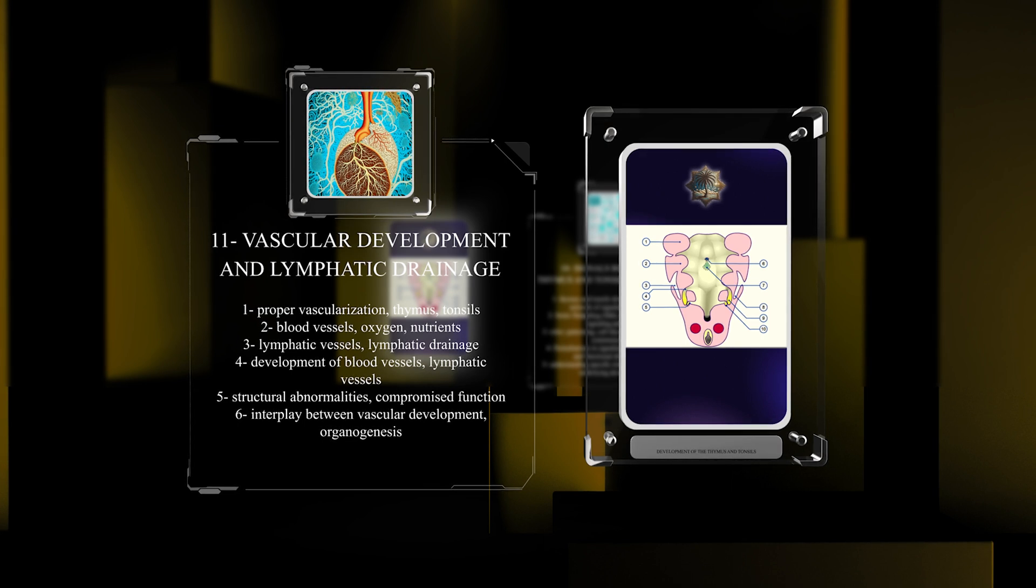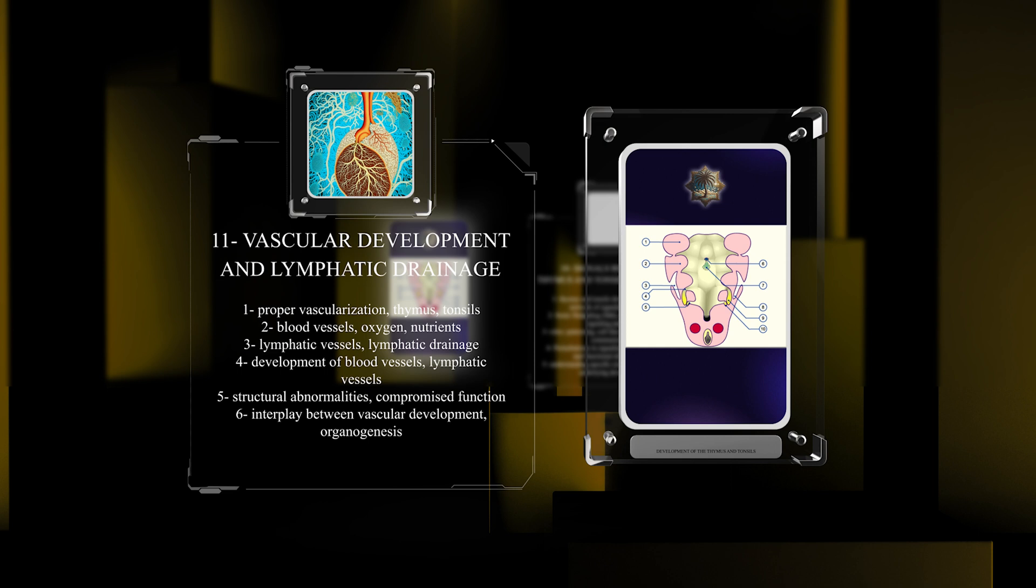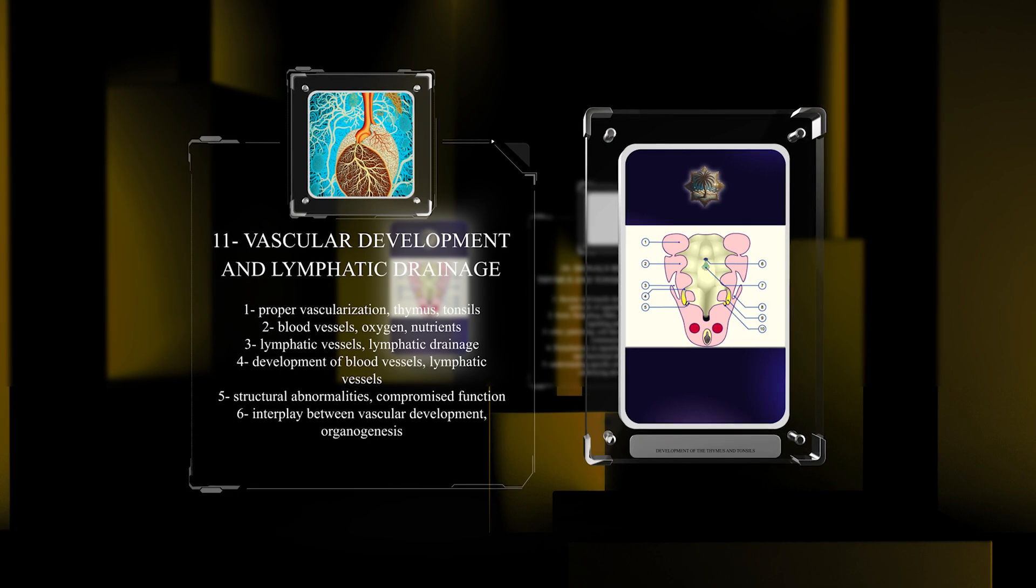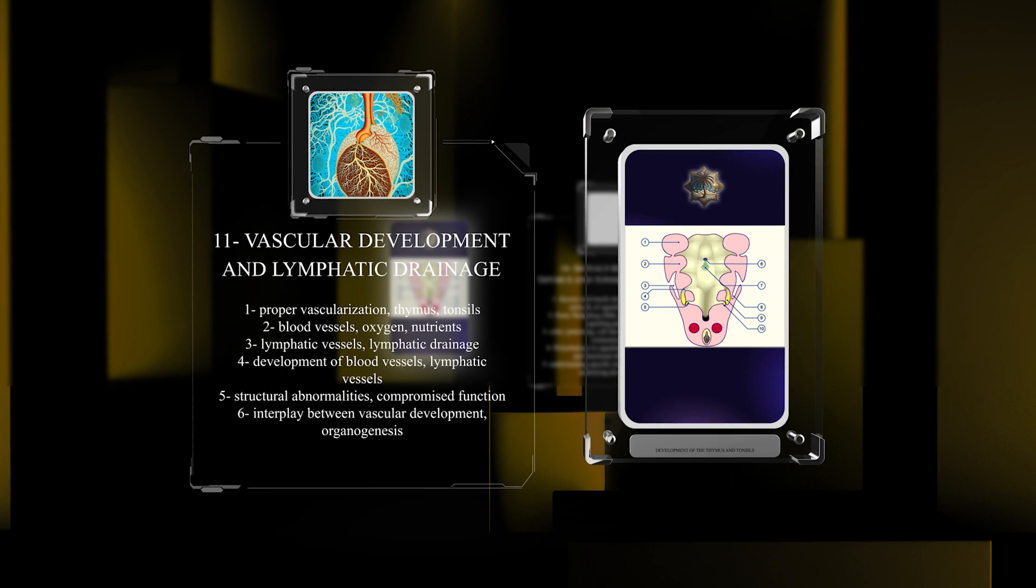Failure in vascular development can lead to structural abnormalities and compromised function of the thymus and tonsils. Understanding the crucial interplay between vascular development and organogenesis provides valuable insights into the normal functioning of these organs.